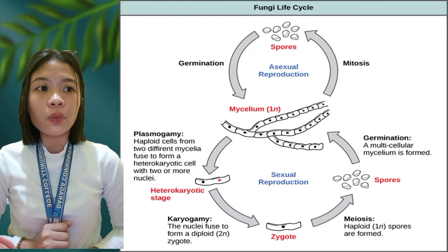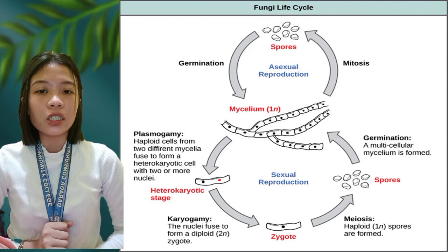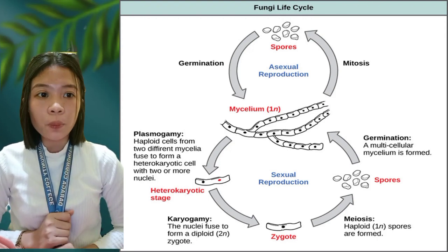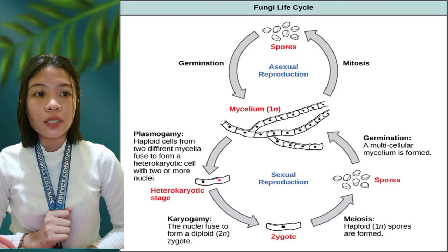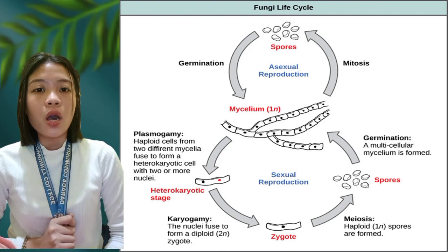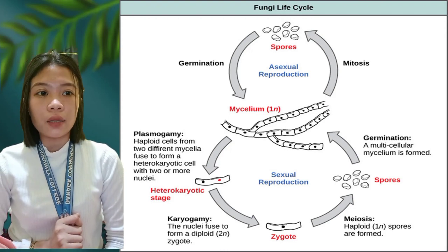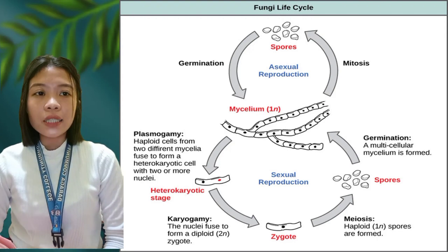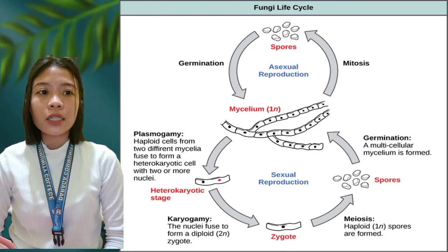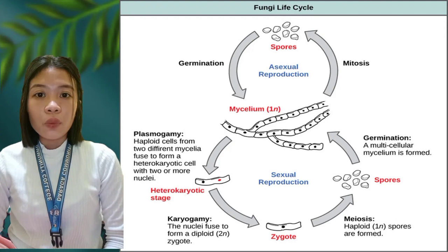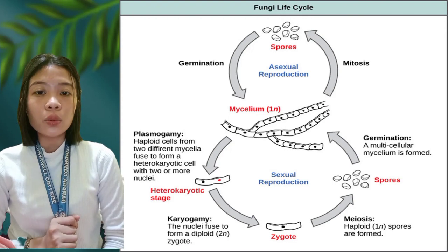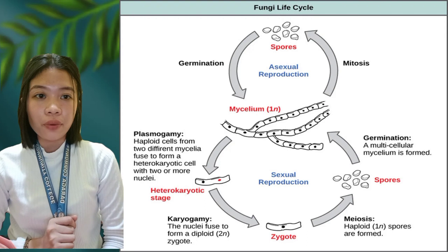When the mycelium of fungi undergoes sexual reproduction, the first stage is plasmogamy. Before that, one of the basidium spores finds a place where it can germinate and will produce a homokaryotic mycelium with one nucleus per hyphal compartment. The haploid cells from two different mycelia fuse to form a heterokaryotic cell with two or more nuclei — this is called plasmogamy. We now have one large cell with two nuclei, known as the heterokaryotic stage.